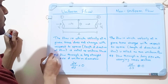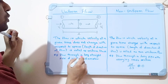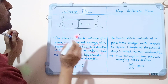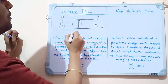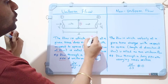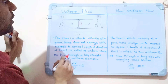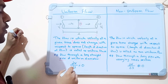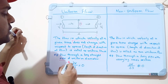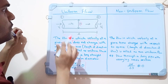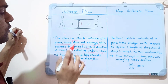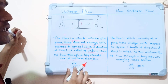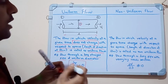The definition: flow in which velocity at a given time does not change with respect to space in the direction of flow is called uniform flow. Example: flow through a long straight pipe of uniform diameter. The equation for uniform flow is ∂v/∂s = 0, where ∂v is change in velocity and ∂s is change in displacement.